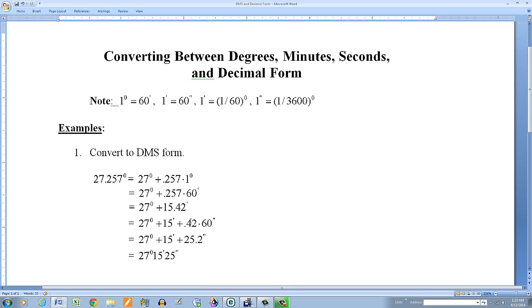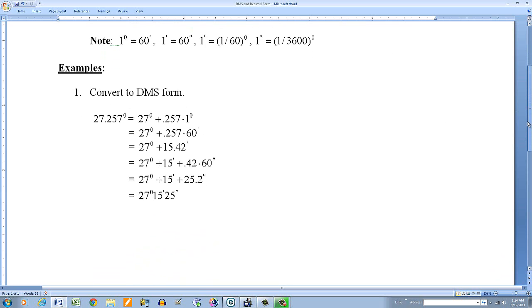So I replace the one minute by 60 seconds. I did the multiplication, so I get 25.2 seconds. So putting this together then, 27.257° becomes 27° 15' 25". And I just round the 25.2 to 25 seconds.